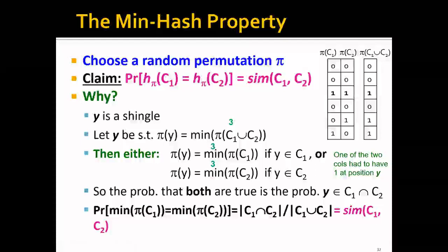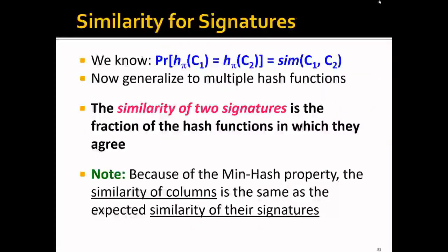Now, if you're still not convinced, this is a time when you can pause the video for five minutes and try to digest it. We know that the probability that the hash value of C1 equals the hash value of C2 is equal to the Jaccard similarity of C1 and C2. Now we can generalize to multiple hash functions. The similarity of two signatures is the fraction of hash functions in which they agree. And note that because of the minhash property, the similarity of columns is actually the same as the expected similarity of their signatures.